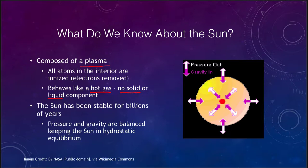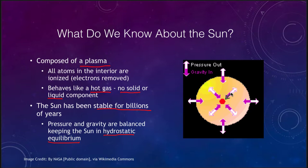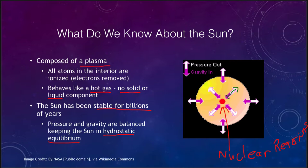It doesn't matter that the densities at the center of the Sun are much denser than anything we can imagine here on Earth — there is still no solid or liquid component to the Sun. We also know that the Sun has been stable for billions of years, and that is using what we call hydrostatic equilibrium. It is in a complete state of balance. We know this because the temperatures on the Sun could not have changed drastically; otherwise, if it had gotten too hot or too cold, all life on Earth would have been wiped out. Gravity pulling everything inward is balanced by the pressure pushing outward from nuclear reactions in the core.